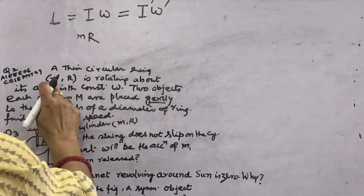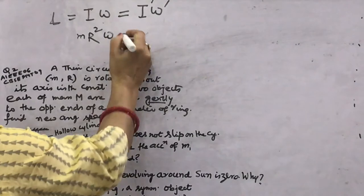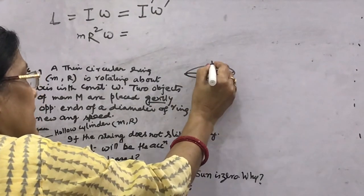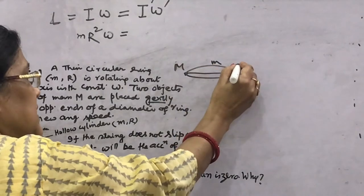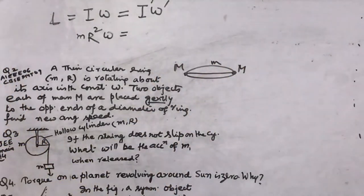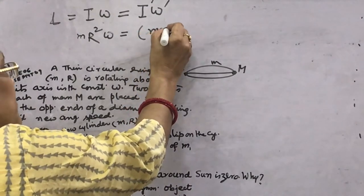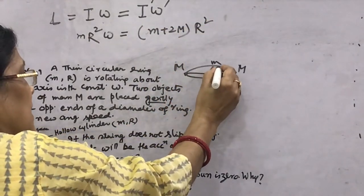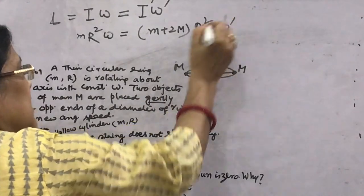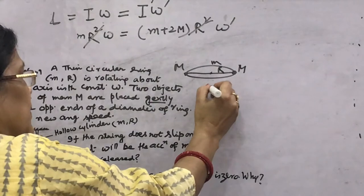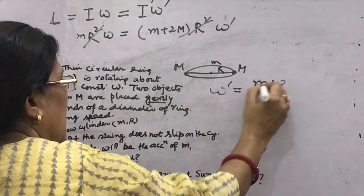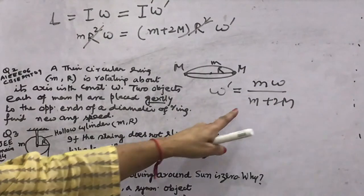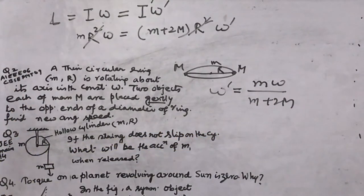The ring has moment of inertia I = mr² (small m). The two masses M are placed at opposite ends of the diameter at radius r, so the new moment of inertia is (m + 2M)r². Setting I·ω = I'·ω': mr²·ω = (m + 2M)r²·ω'. Since r² cancels, ω' = mω/(m + 2M). Remember to distinguish carefully between small m (ring) and capital M (added masses).